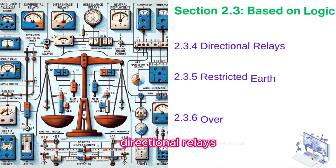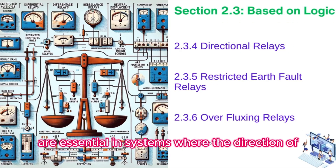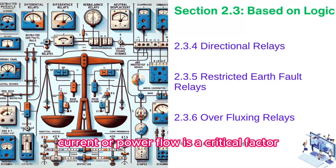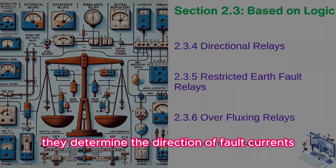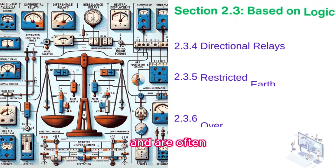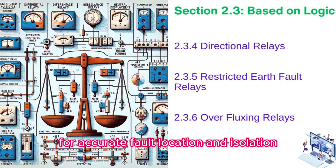Directional relays are essential in systems where the direction of current or power flow is a critical factor. They determine the direction of fault currents and are often used in conjunction with other relay types for accurate fault location and isolation.